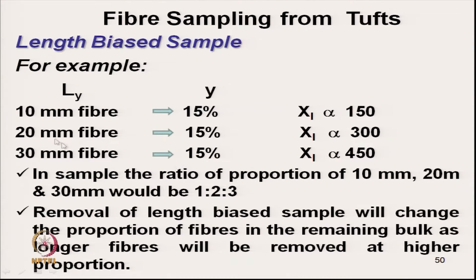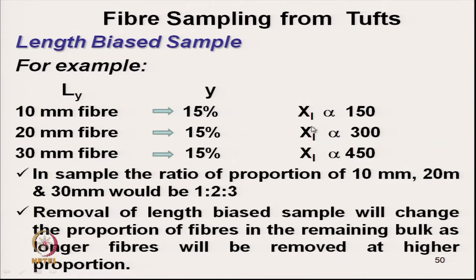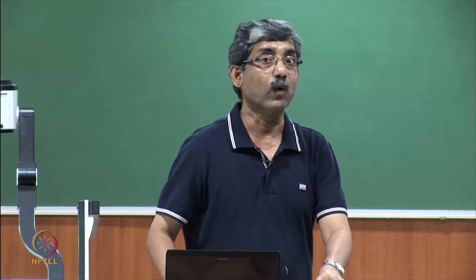For example, suppose there are 3 different types of fibres mixed with other fibres: 10 millimetre fibre at 15 percent, 20 millimetre fibre at 15 percent, and 30 millimetre fibre at 15 percent. They are equally distributed, so the proportion ratio is 1:1:1 along with other fibres. When it is a length-biased sample, Xi is proportional to 10×15=150, 20×15=300, and 30×15=450. So the proportion of 10mm, 20mm, and 30mm fibre becomes 1:2:3.